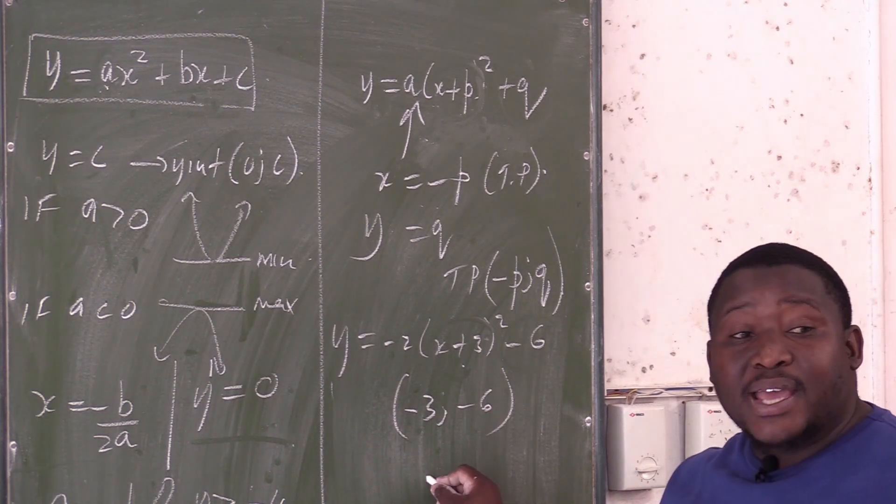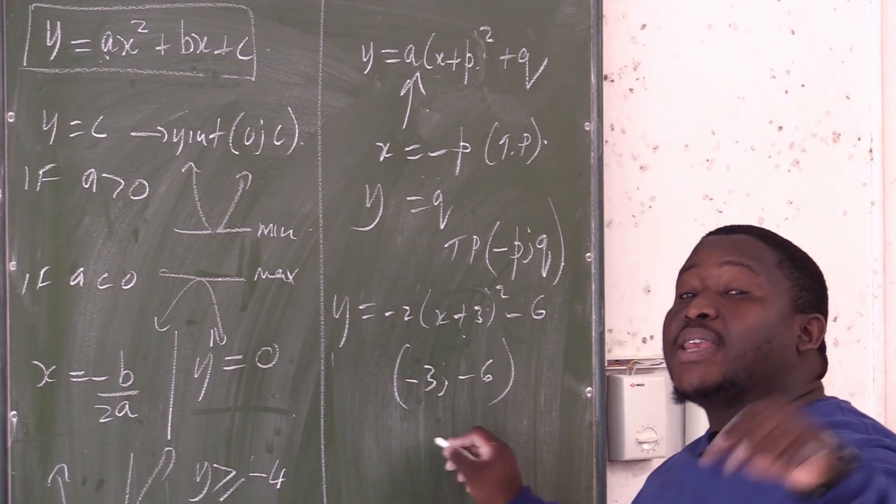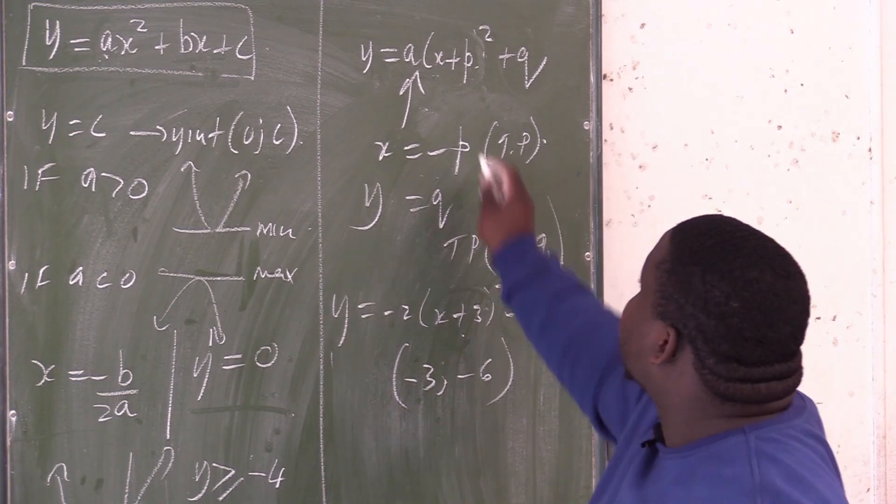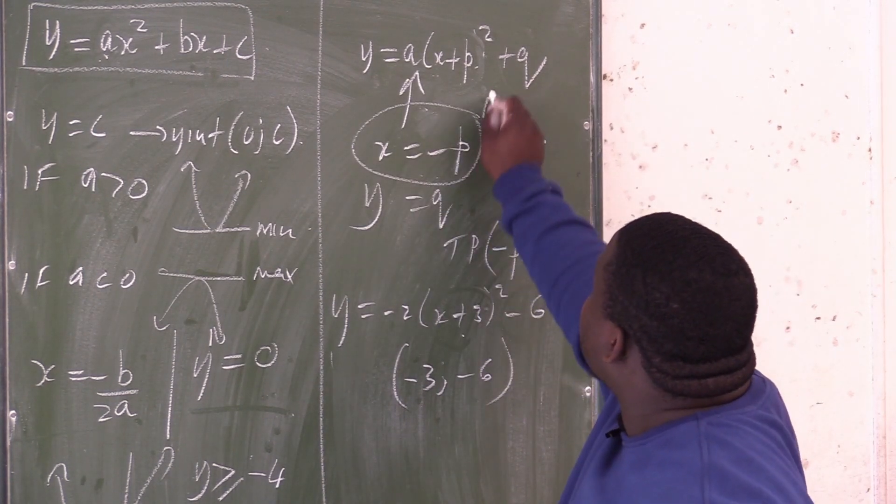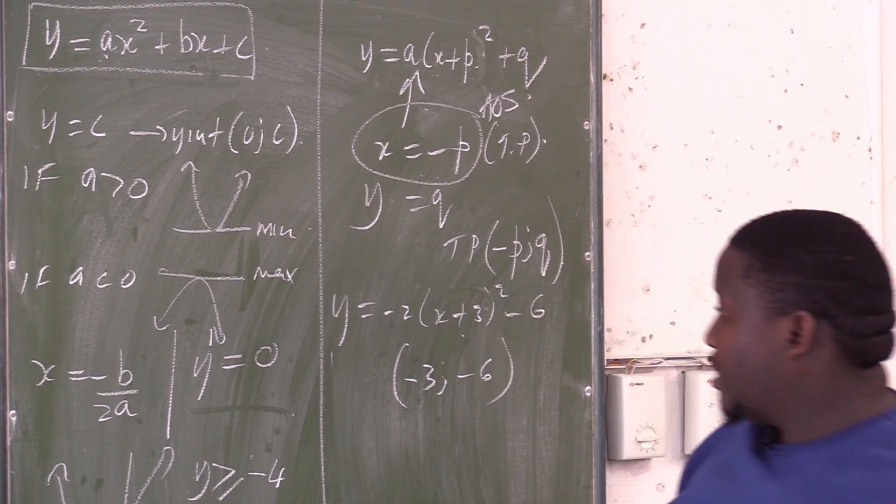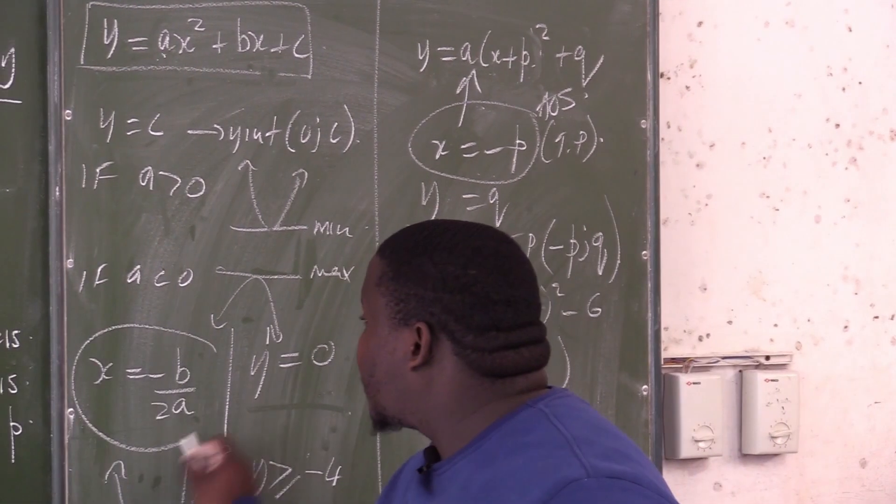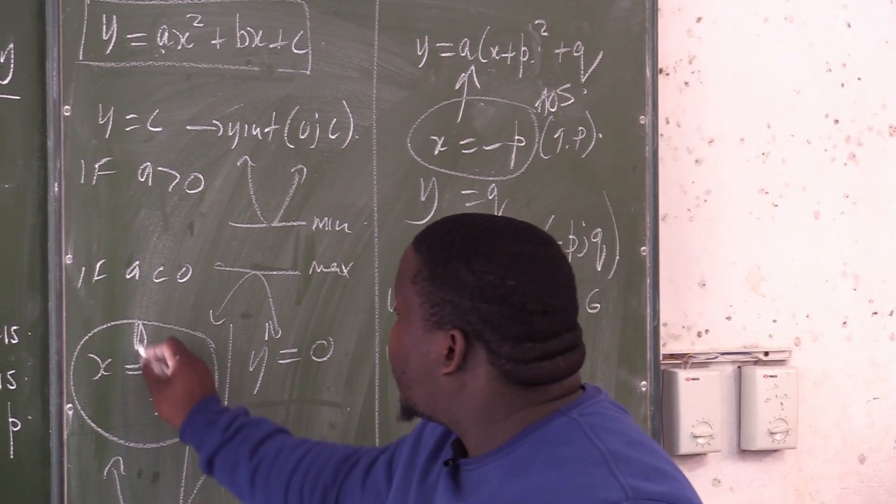The axis of symmetry will be the x value at the turning point. It means this x equal to minus p is my axis of symmetry. This x equal to minus b over 2a is the axis of symmetry.